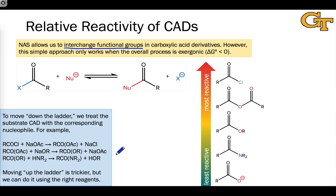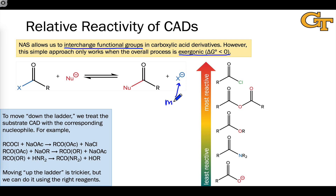For these reactions to work, the key general principle is that the overall process must be exergonic — in other words, the free energy change of the overall process must be less than zero. And in order for this to be the case, it must be the case that the product anion, X- in this general figure, is more stable than the reactant anion or the reactant nucleophile.